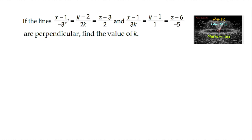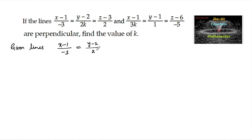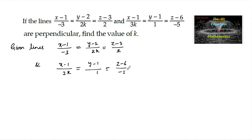If the lines (x-1)/(-3) = (y-2)/(2k) = (z-3)/2 and (x-1)/(3k) = (y-1)/1 = (z-6)/(-5) are perpendicular, find the value of k. So the given lines are (x-1)/(-3) = (y-2)/(2k) = (z-3)/2 and (x-1)/(3k) = (y-1)/1 = (z-6)/(-5).